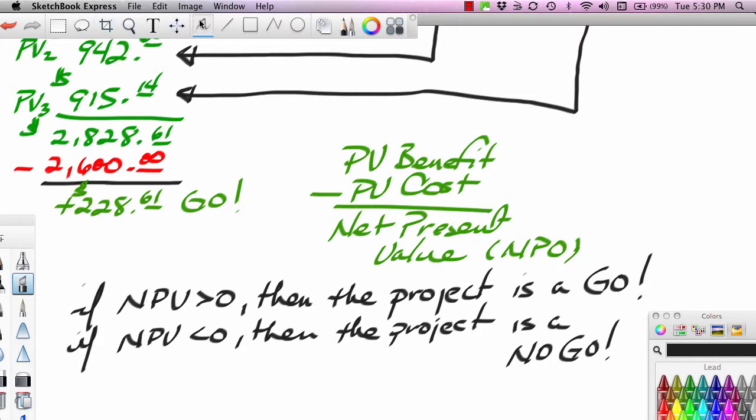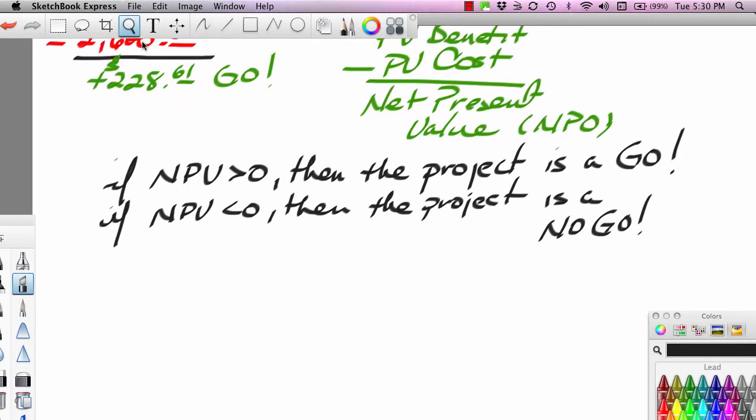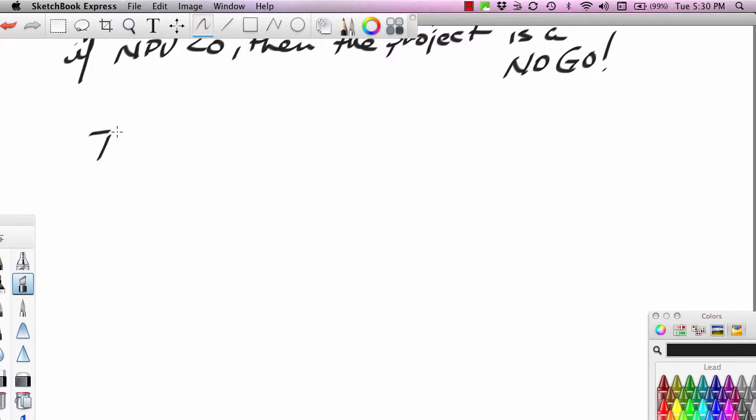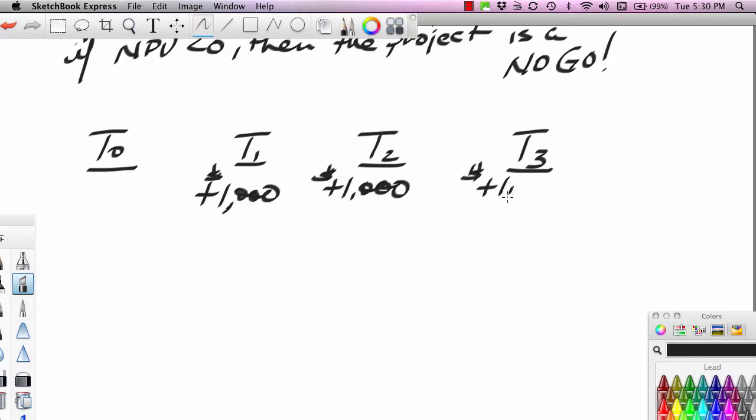Now I'd like to run this at a different interest rate. Let's go ahead and set the problem up again. Here's T0, T1, T2, T3, plus 1,000 in each of these three years. This is either cost reduction or revenue enhancement. Either way, profits are going up by 1,000. I'm going to assume that R is not 3%, but R is 9%. So what if the interest rate is 9%, not 3%?